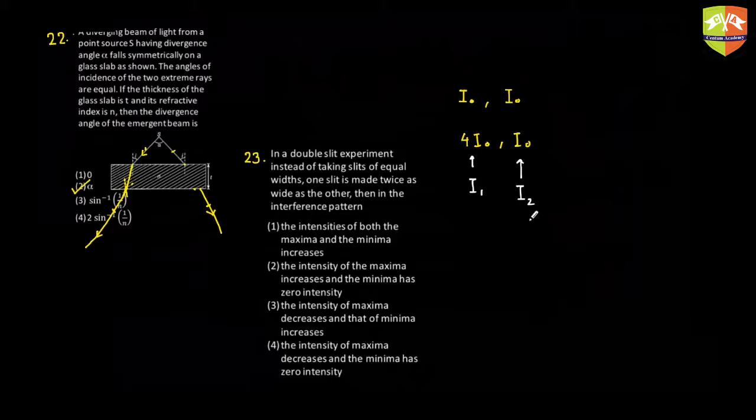Now you'll see that the maximum possible intensity is root I1 plus root I2, the whole square, which will come out to be 9I0. And minimum possible intensity is root I1 minus root I2, the whole square, which is I0. So earlier, the minimum intensity was zero and maximum was 4I0. Now minimum is I0 and maximum is 9I0. So both maxima and minima, both of the intensities are increasing.